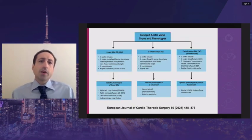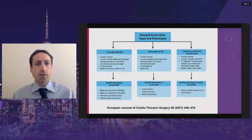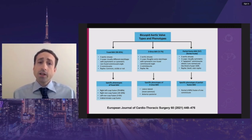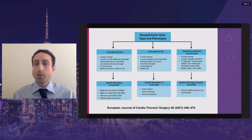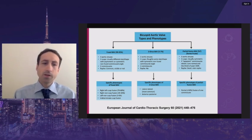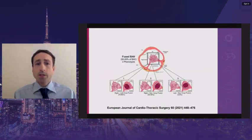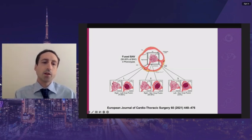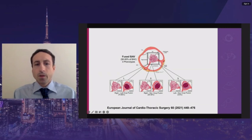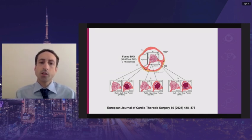The bicuspid aortic valves were divided into three types: fused bicuspid aortic valves, which have three aortic sinuses, two commissures, and may or may not have a visible raphe; two-sinus bicuspid aortic valves, which have two sinuses, two commissures, and no raphe; and partially fused bicuspid aortic valves, where there's a mini raphe which fuses less than 50 percent of the leaflet. Here we can see the most common type — the fused bicuspid aortic valve — showing raphe between the left and right coronary cusps, with the non-fused cusp often larger. Left-right cusp fusion is the most common and is associated with root dilation and ascending aorta dilation, while right-non-coronary fusion is less common and more associated with ascending dilation.